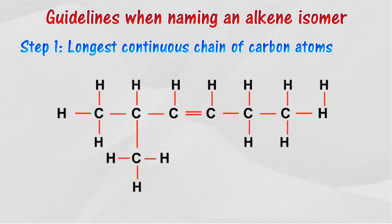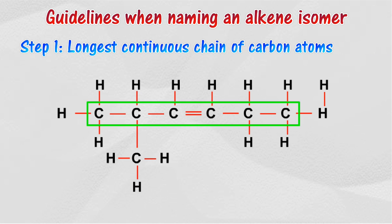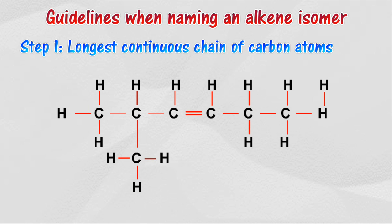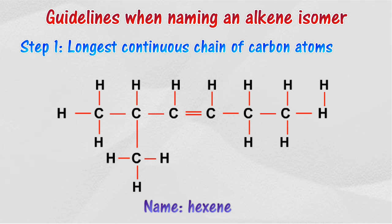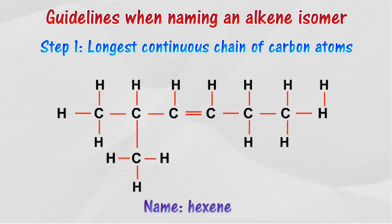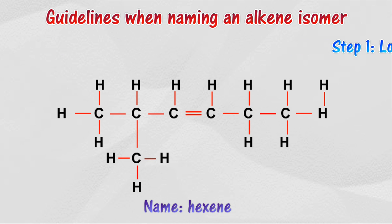Step 1: Select the longest continuous chain of carbon atoms in the molecule. The number of carbon atoms in the parent chain is 6; thus, the name of the parent chain is hexane.